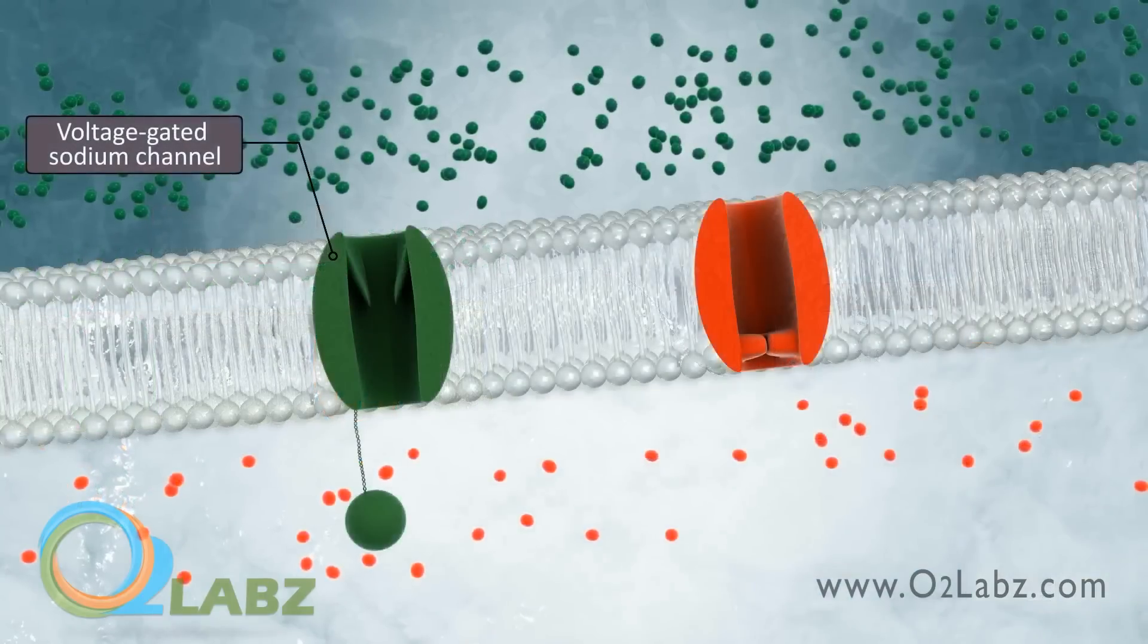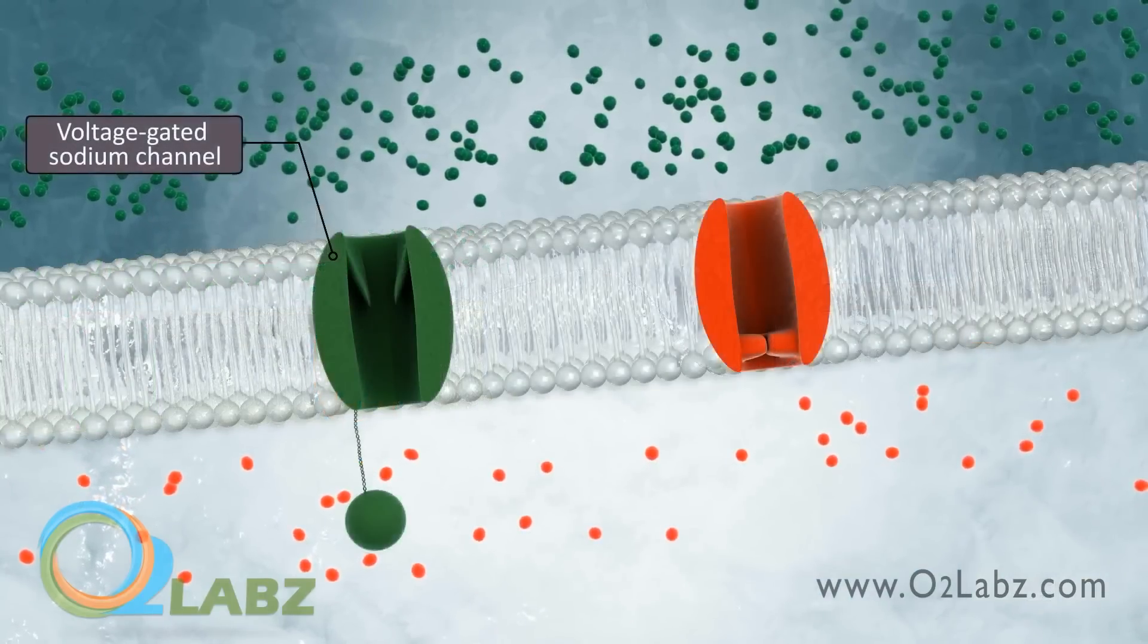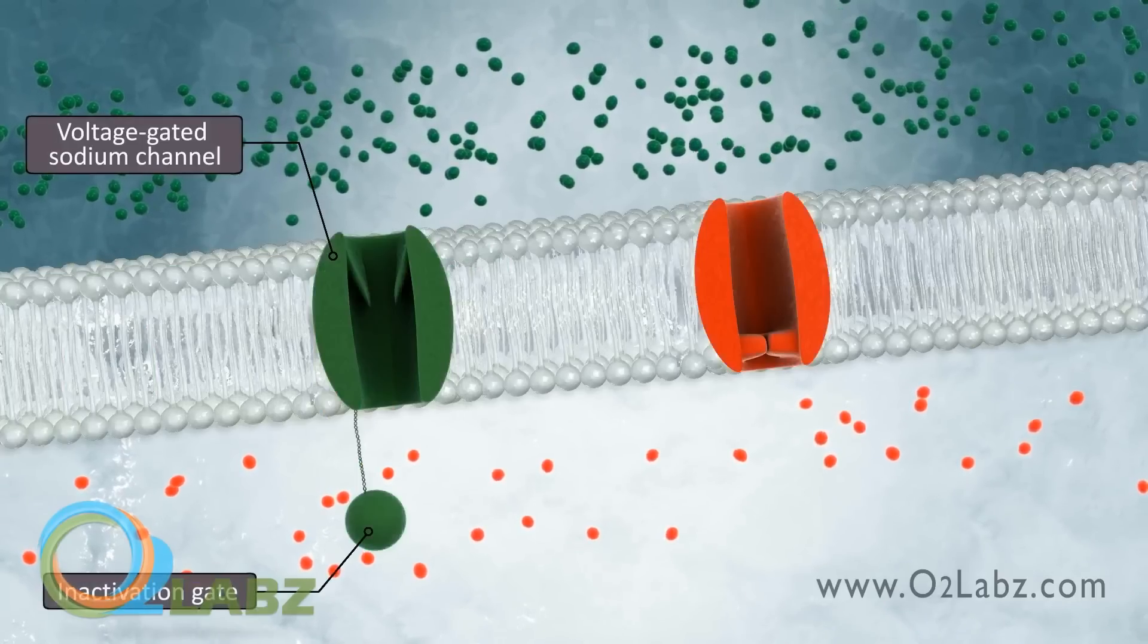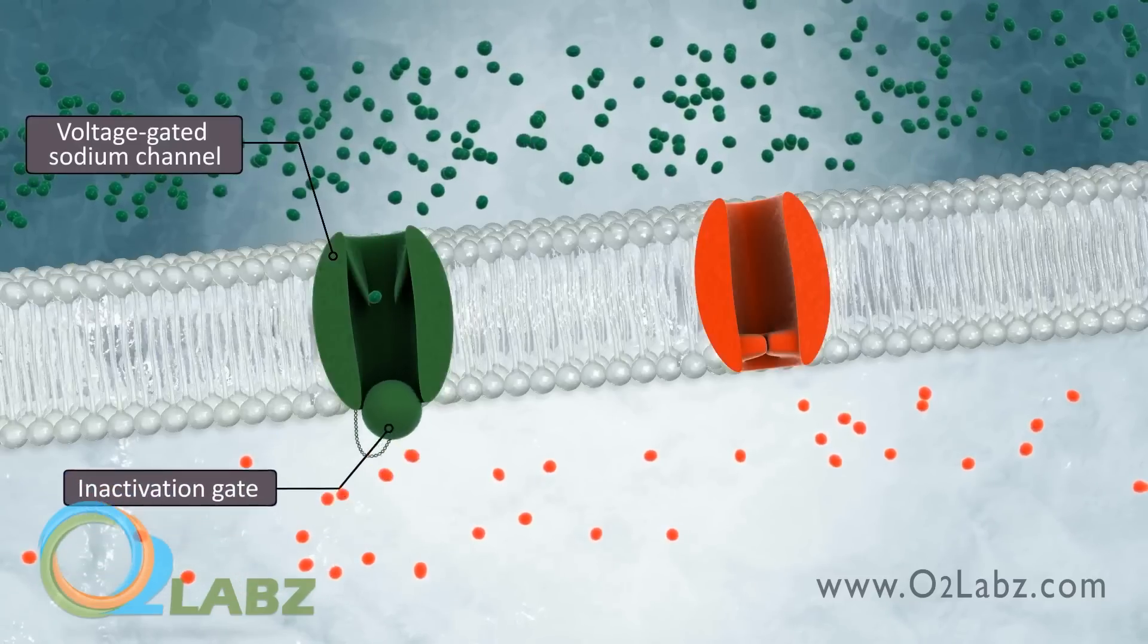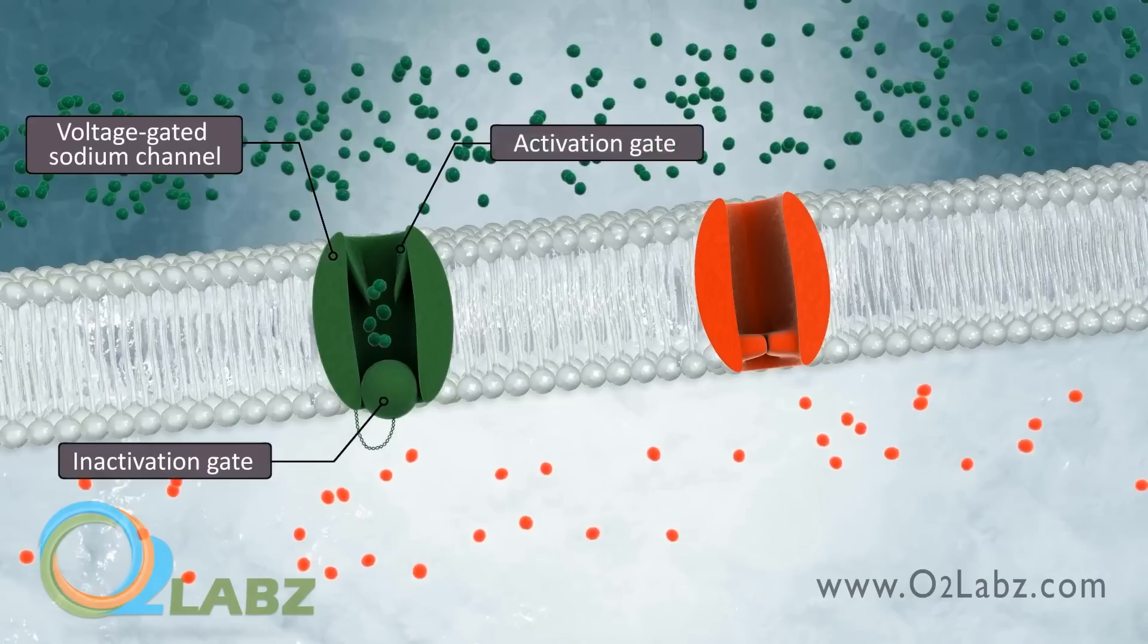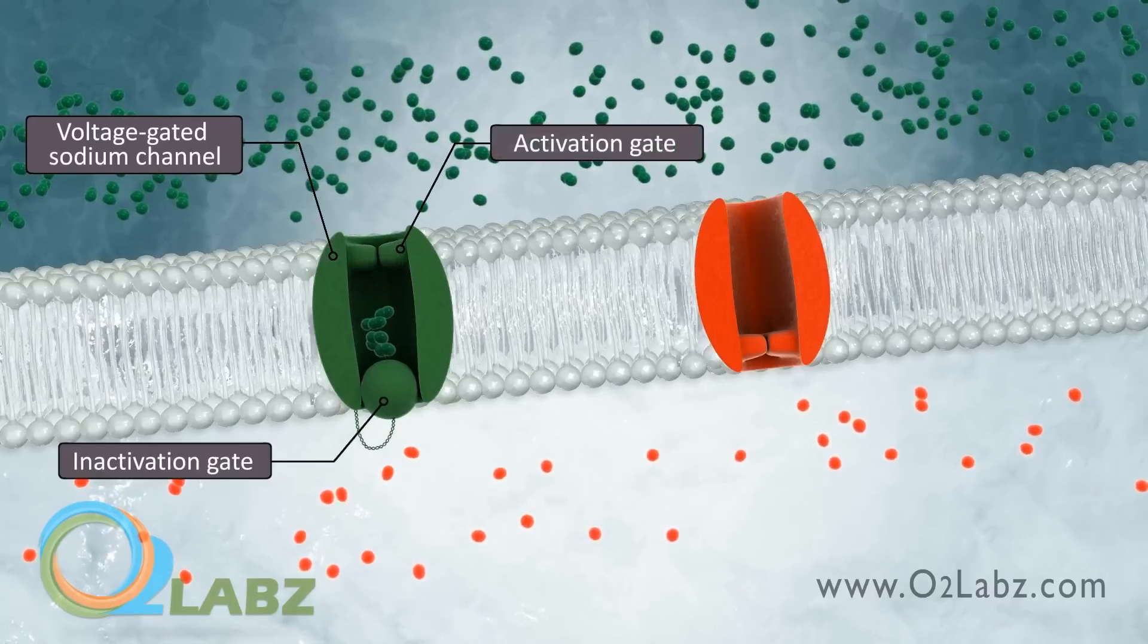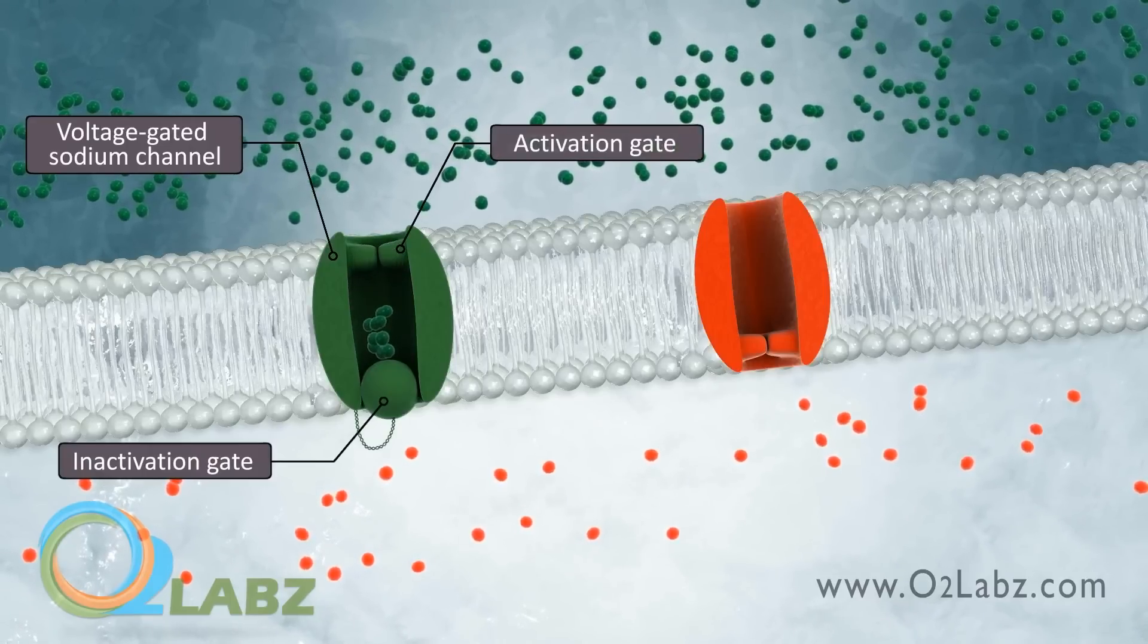Some voltage-gated channels have an additional gate, referred to as an inactivation gate, which temporarily plugs the channel, so ions cannot pass through, even if their activation gate is open. Its purpose is to ensure that ions do not pass through the gate at an inappropriate time.